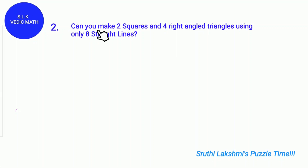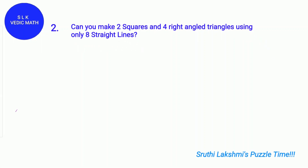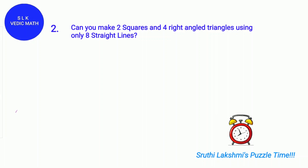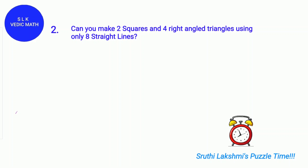Puzzle number 2. Can you make 2 squares and 4 right angle triangles using only 8 straight lines? You will have 20 seconds to solve this problem starting now. Time's up.